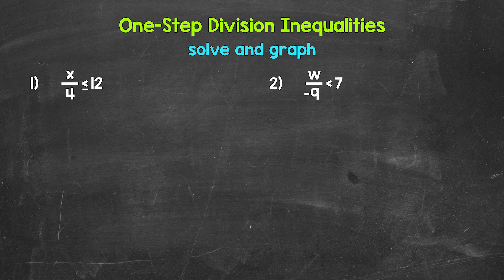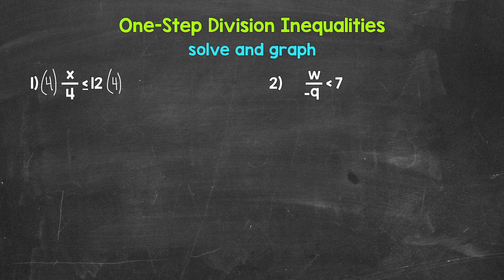Let's jump into number one, where we have x divided by 4 is less than or equal to 12. Since x is being divided by 4, we need the inverse operation of division — that's multiplication. So let's multiply the left side of the inequality by 4. Whatever we do to one side of an inequality, we must do to the other.